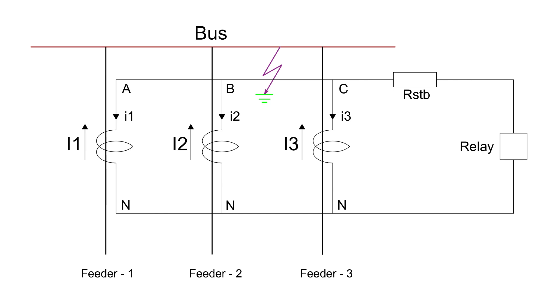If there is a fault on the bus, according to Kirchhoff's current law, the summation of current will not be zero, resulting in a net current flowing through the relay coil, causing it to operate. However, under normal conditions, the summation of the current is zero, meaning no current flows through the relay coil, keeping the relay stable.